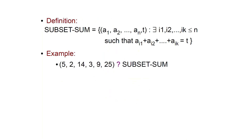Let us first define the Subset Sum problem. Subset Sum has as input a list of n numbers a1, a2, all the way to an, and a target t. It asks if there is a subset of these numbers which sums to t — that is, if there are indices i1, i2, to iK such that ai1 plus ai2 plus ... plus aiK equals t.